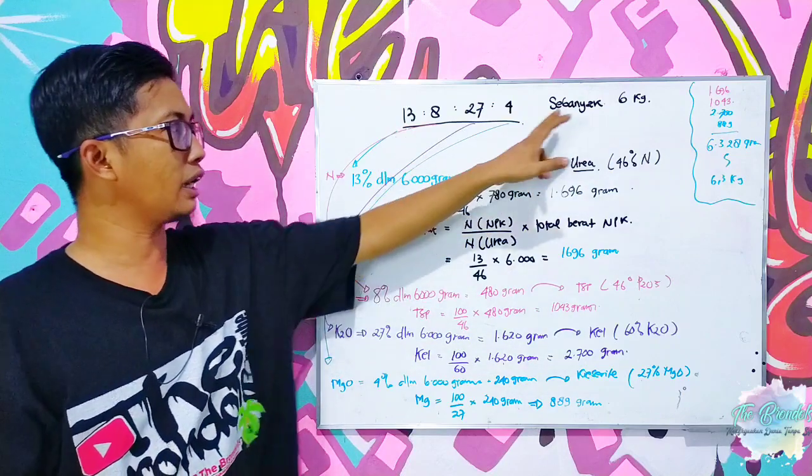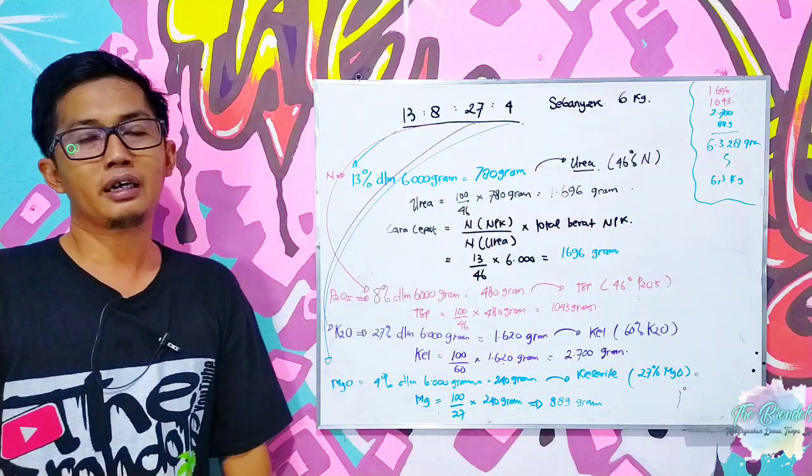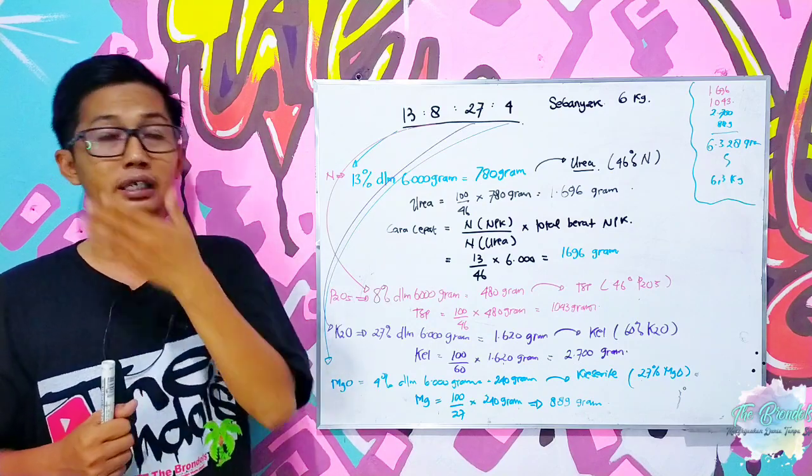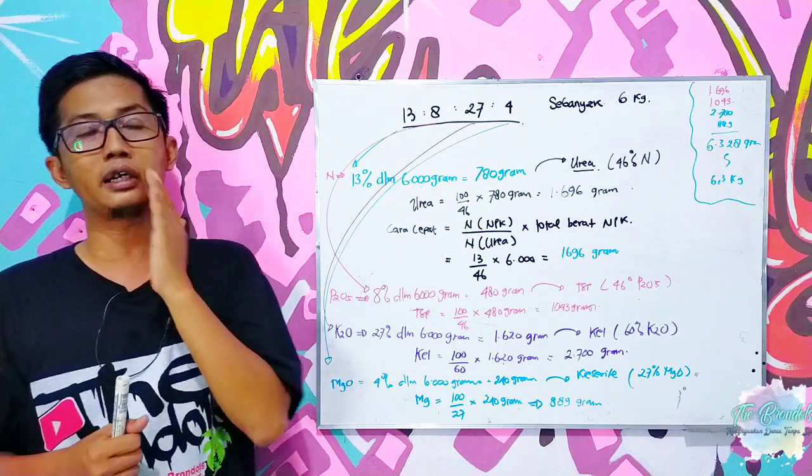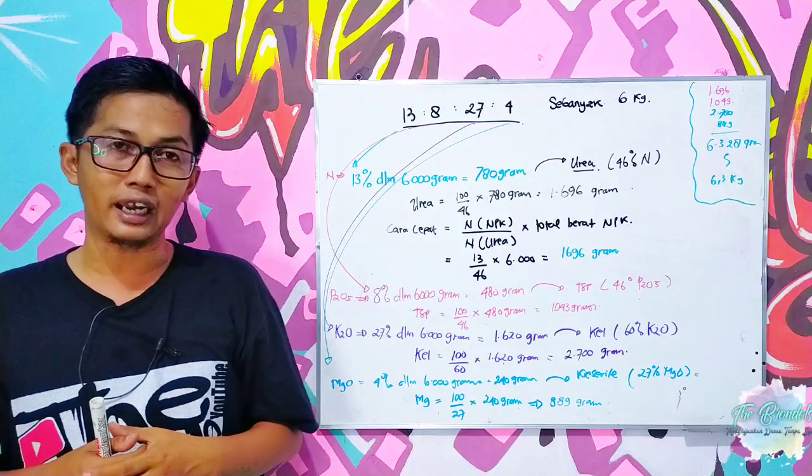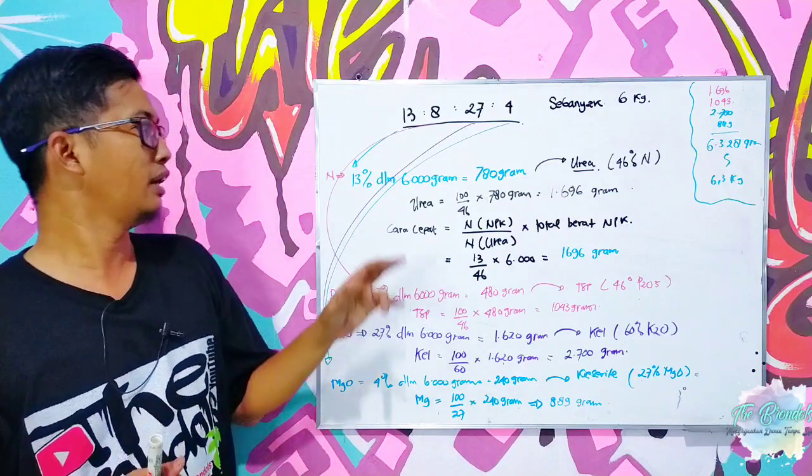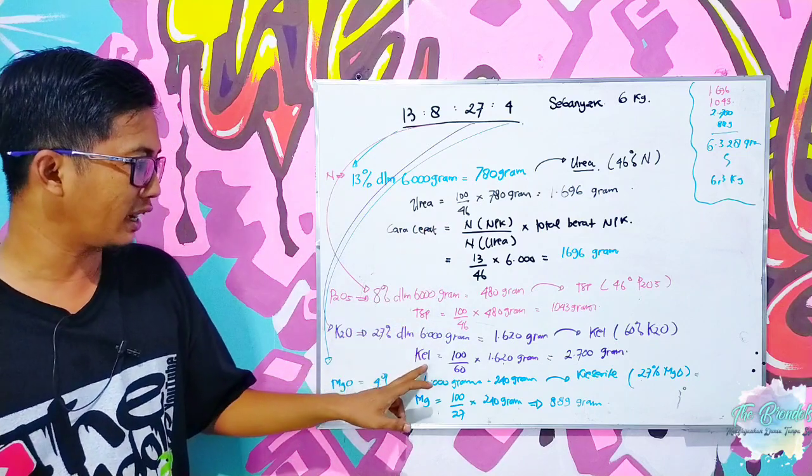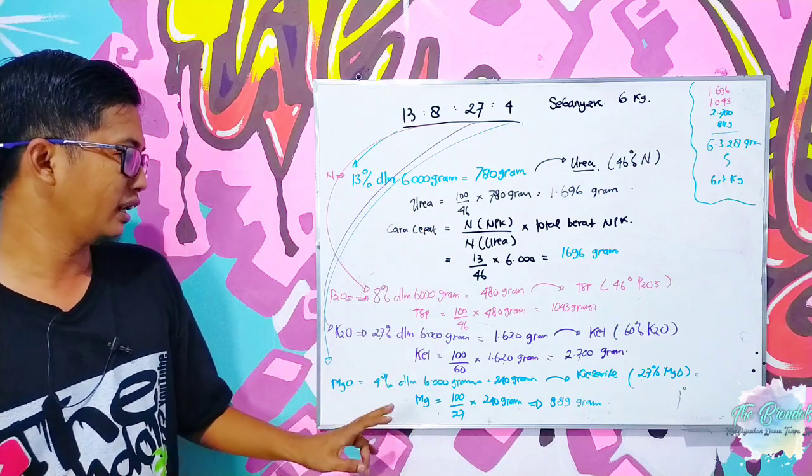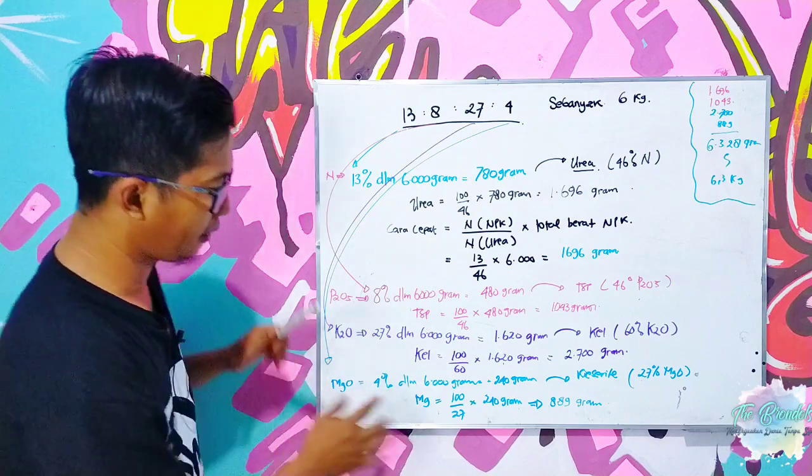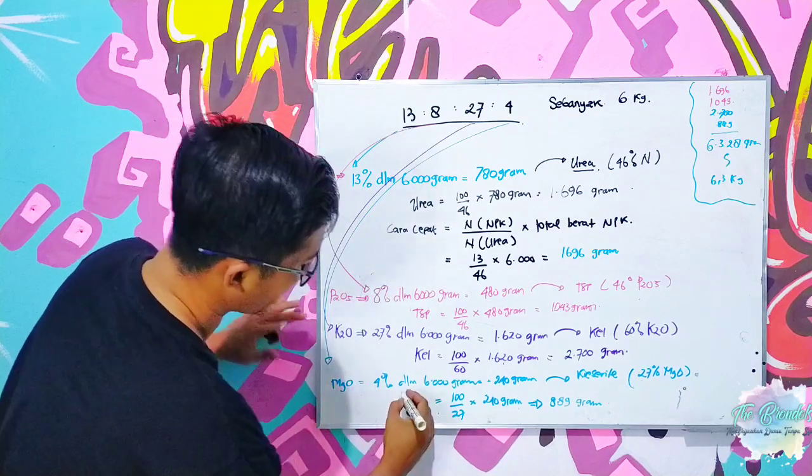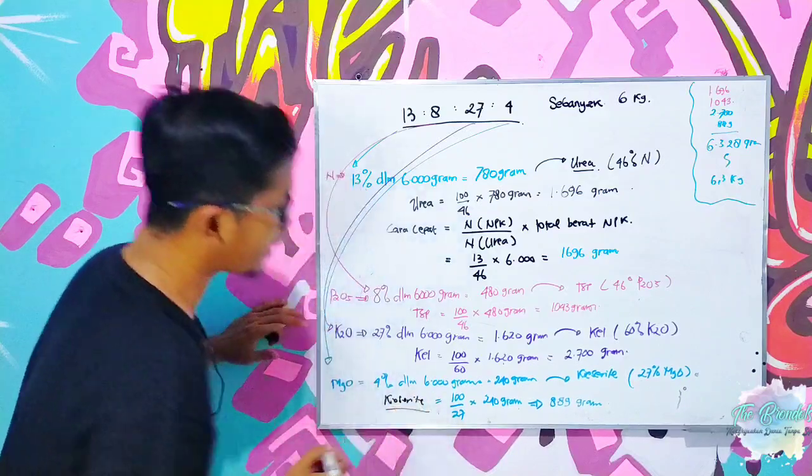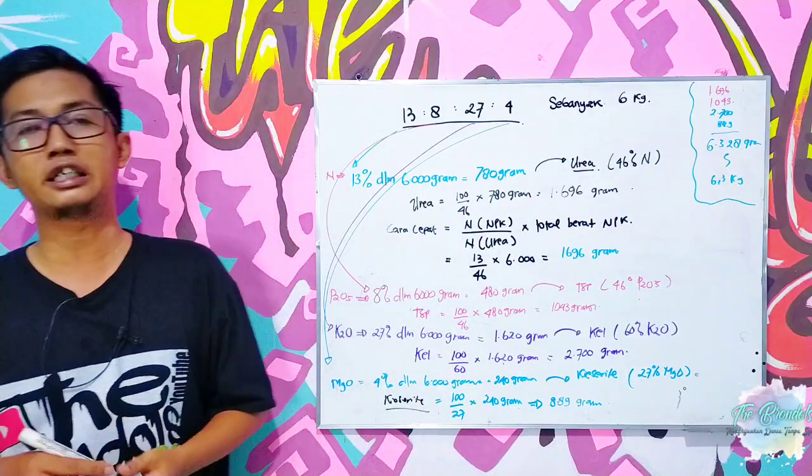Kita akan membuat sebanyak 6 kg. Nah ketika kita menggunakan 6 kg ini Pak Pendi, 13-8-27-4, kalau seandainya saya mau menggunakan pupuk tunggal, saya tanya lagi pupuk tunggalnya menggunakan apa. Adalah menggunakan urea, menggunakan TSP, menggunakan KCL, dan menggunakan kiserit.